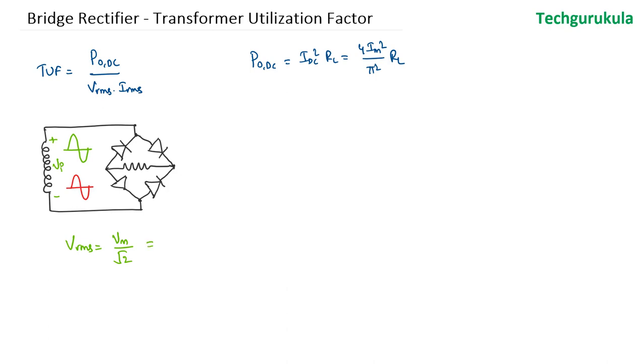So hence the Vrms at the secondary winding would be Vm over square root 2. If you want to write this in terms of current, we can write this as Im times 2Rf plus RL over square root 2. And Irms can be written as Im over square root 2 because it's a sinusoid waveform.